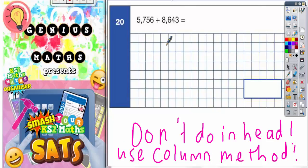Let's get everything lined up. We need 5,756 add 8,643. Now actually, this one is nice and easy because all the numbers will line up properly anyway.